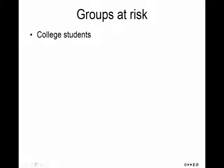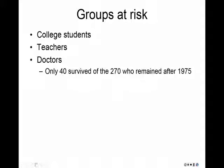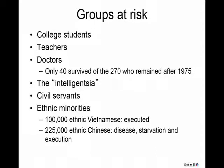Who's at risk to be tortured or killed in the genocide in Cambodia? Think about who were the groups at risk in the German Holocaust. Well, college students, anyone educated — including teachers — is at risk in Cambodia. Doctors: only 40 survived of the 270 who remained in Cambodia in 1975. Anybody part of the intelligentsia was going to be eliminated. Civil servants, ethnic minorities — the Khmer Rouge executed 100,000 ethnic Vietnamese, and about a quarter million ethnic Chinese were left to starvation, execution, and disease.